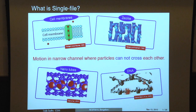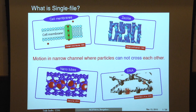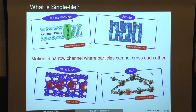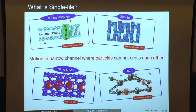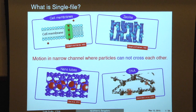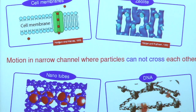Single file diffusion refers to motion of many particles in a crowded one-dimensional channel where no two particles can cross each other. Such restricted motion has been found in many physical systems — for example, in transport of iron molecules across cell membranes through narrow pores, or transport of large molecules in porous medium such as zeolite. There is also transport of many water molecules in carbon nanotubes, and even in biology, where DNA binding proteins move along the DNA sequence searching for a binding site, moving in the presence of other DNA binding proteins.